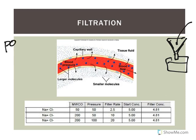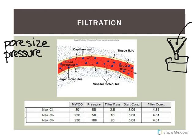One factor is the size of the pores. We have different types of capillaries — some with less space between cells and some with bigger spaces. The greater the pore size, the greater the filtration rate. Another factor is pressure: hydrostatic pressure influences filtration rates by moving fluids and substances across the membrane through those pores. The greater the pressure, the greater the filtration rate.